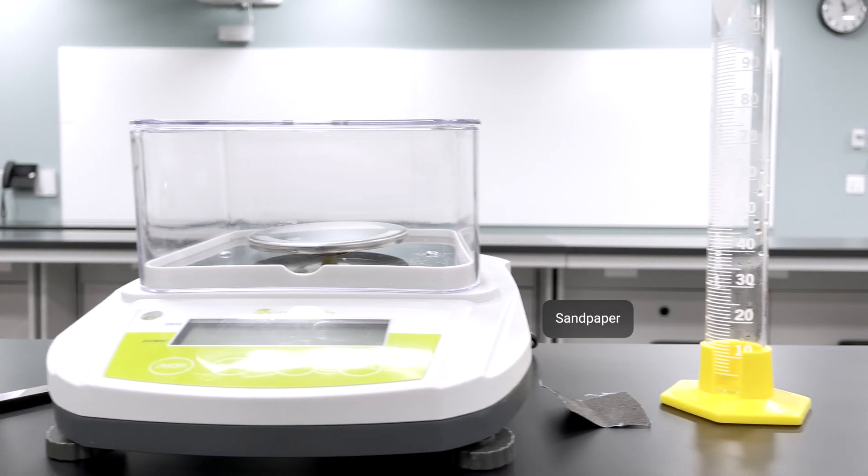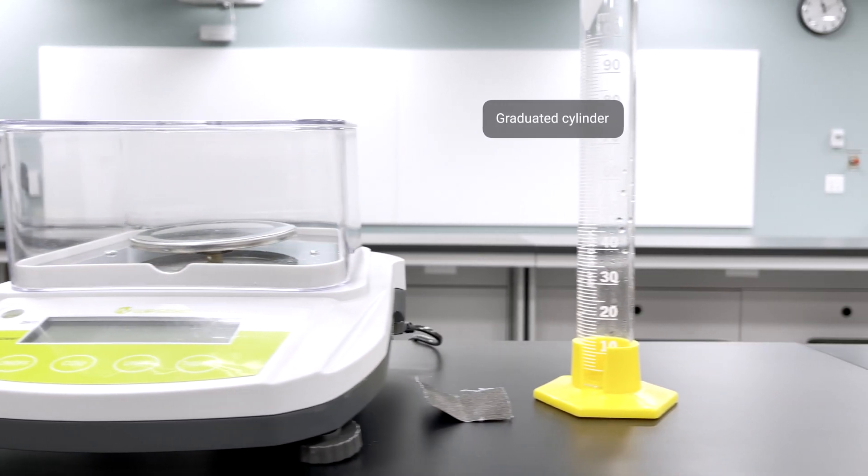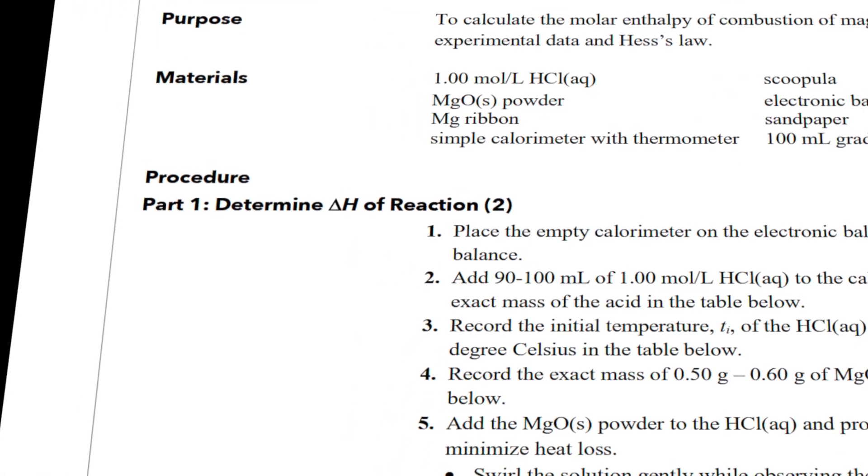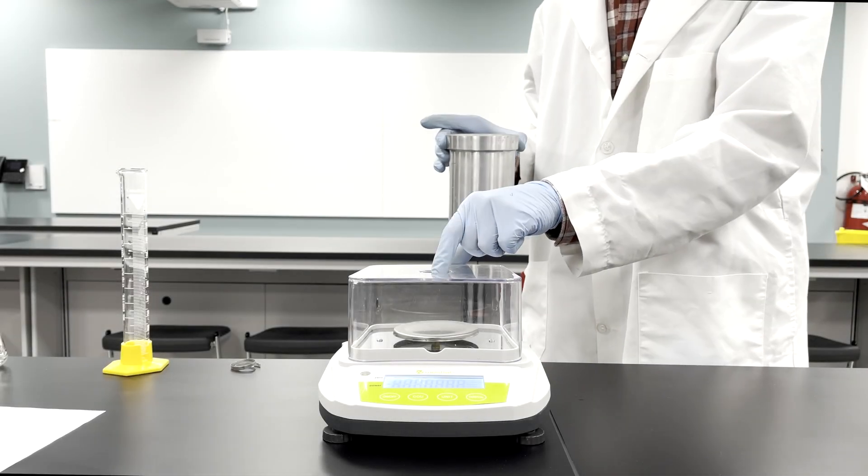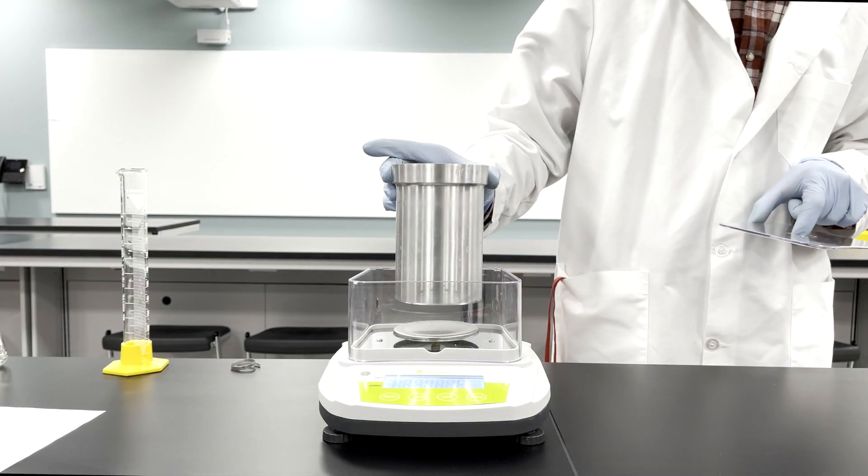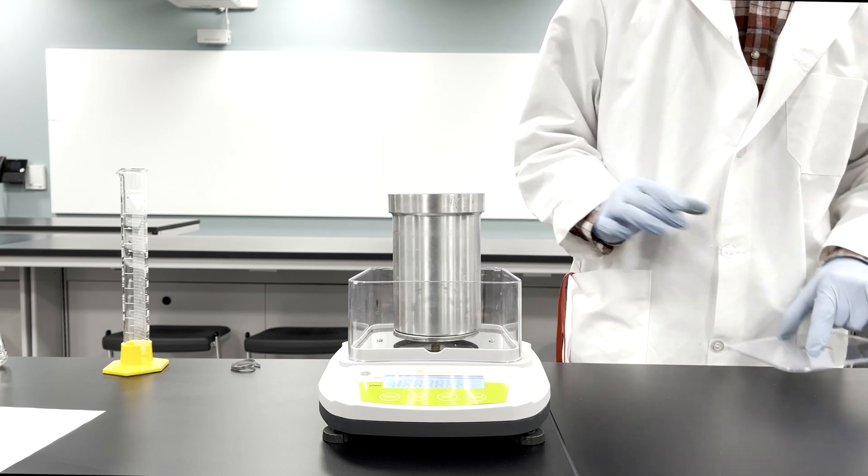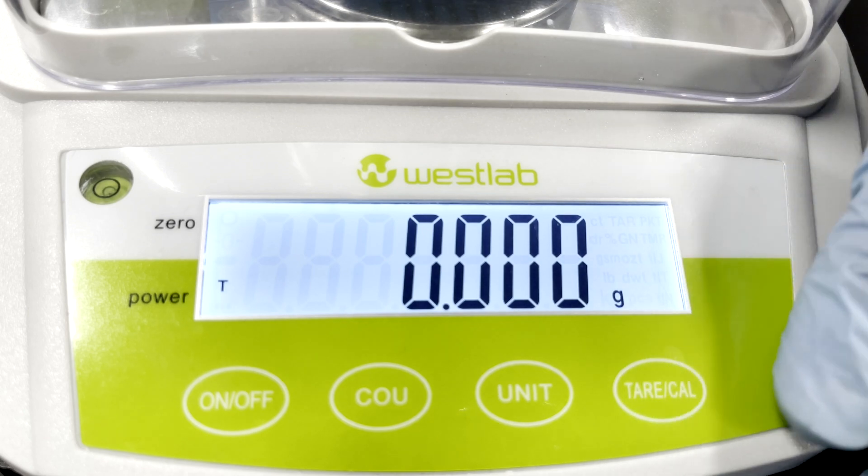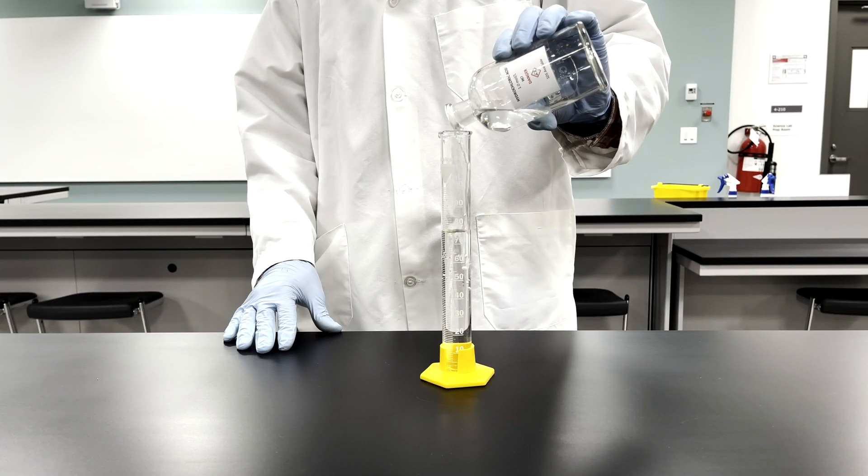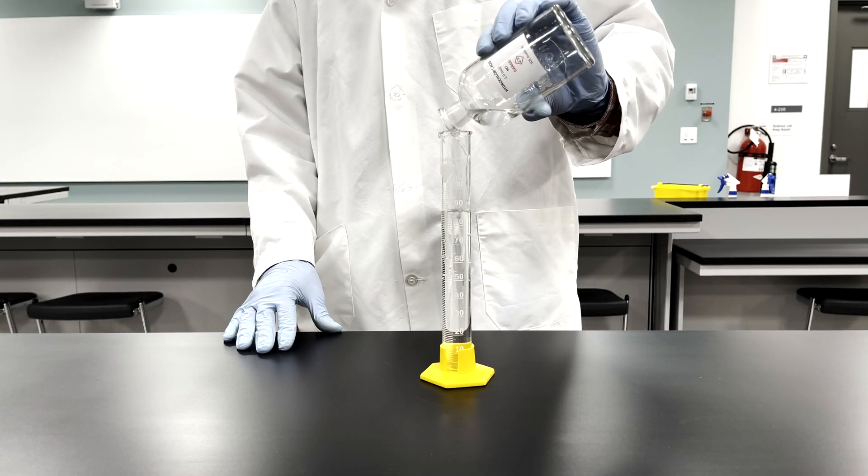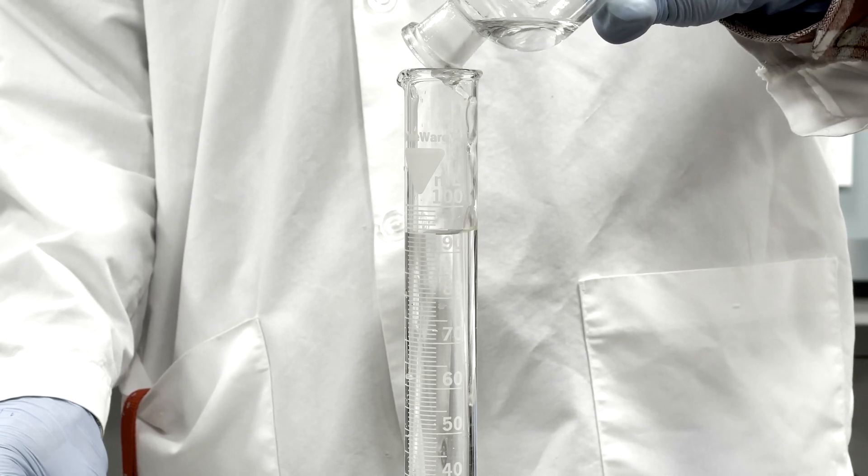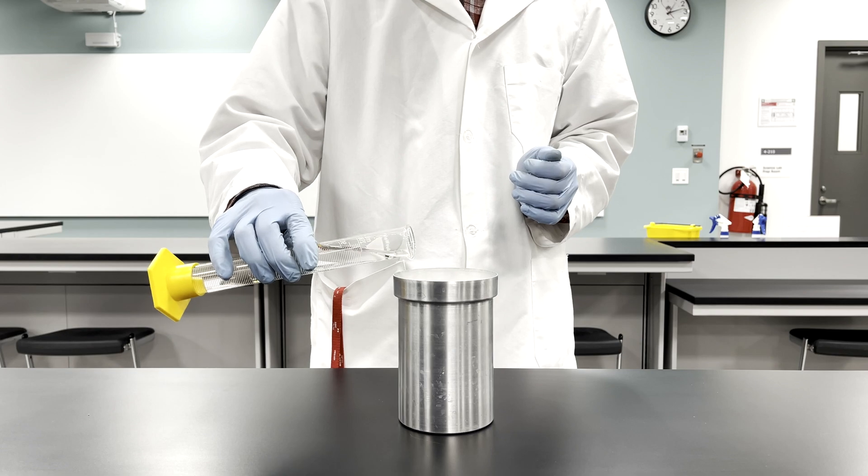In Part 1 of this lab, we shall determine the enthalpy change for reaction 2. First, place the empty calorimeter on the electronic balance and zero the balance. Around 90 to 100 milliliters of aqueous hydrogen chloride is poured into the graduated cylinder and then added to the calorimeter.